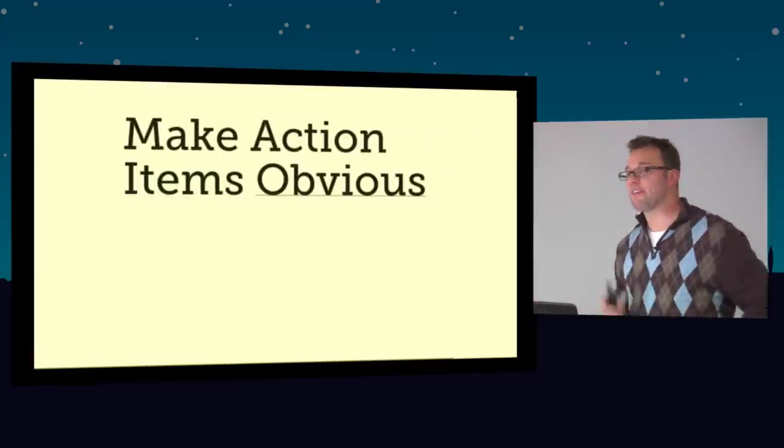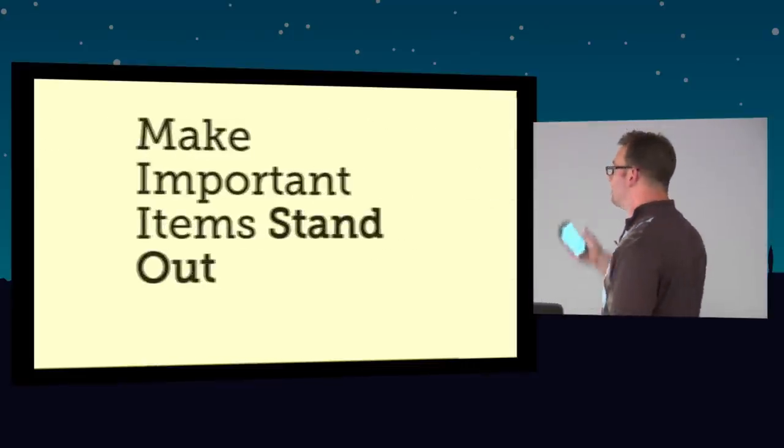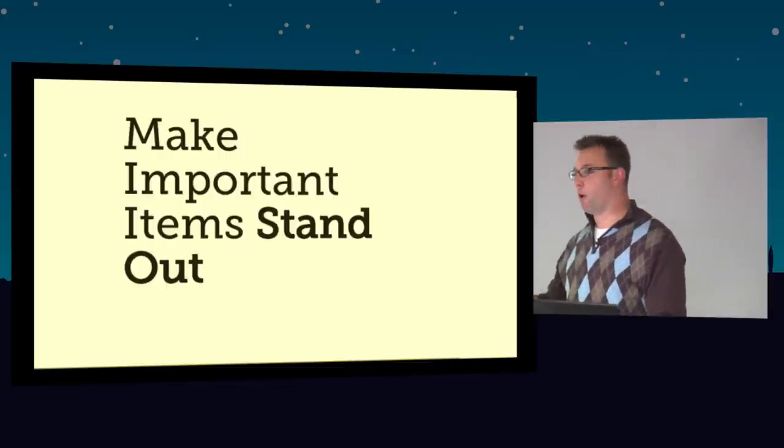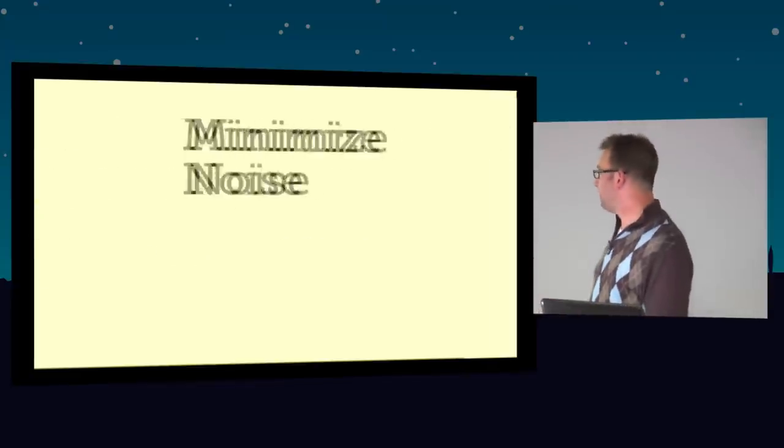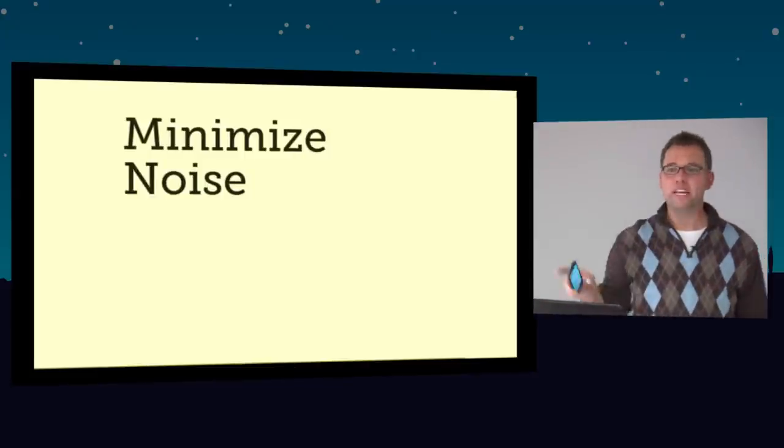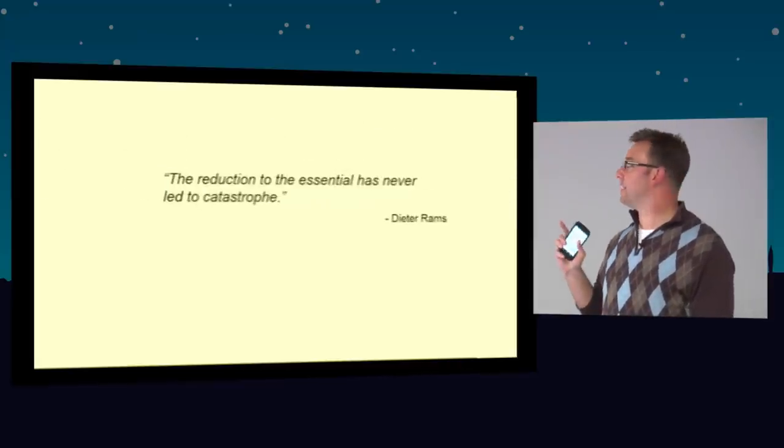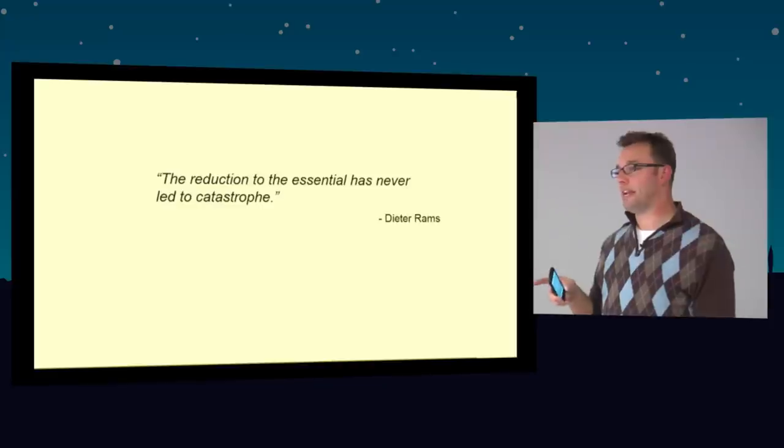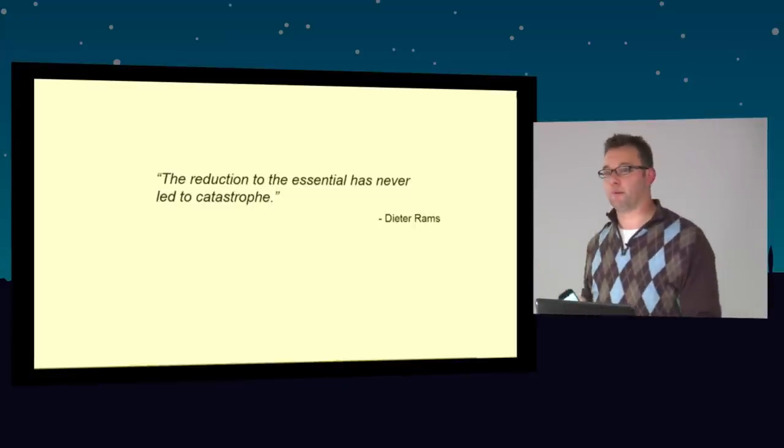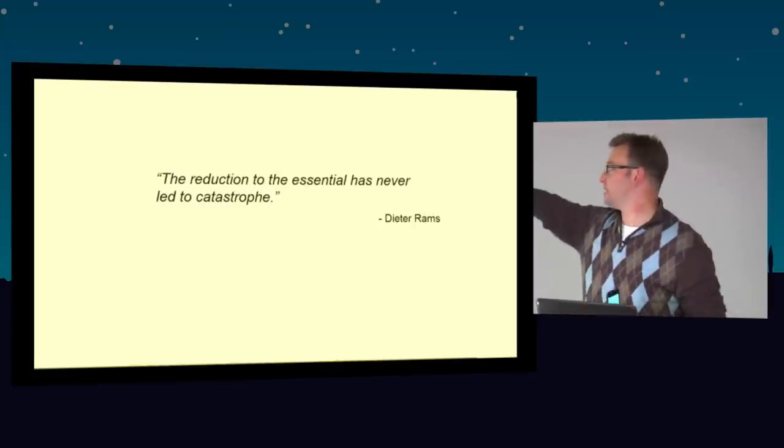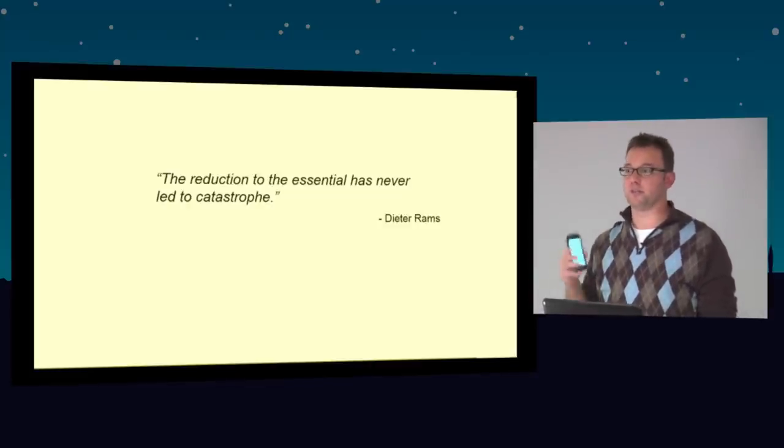Let's talk about some quick hits. Make every action item on the page obvious. Everybody should know that that's a link. Make the important items stand out. Bold them, underline them, change their color, wrap them in a big black box with lots of white space around them. Minimize the noise. If you don't need it there, don't put it there. Omit every needless item. If you can't come up with an explicit reason why something's on the page, it shouldn't be there.